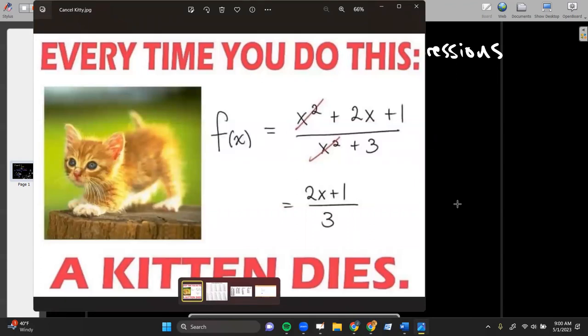I'm showing you this again. I named this file Cancel Kitty, but what I'm showing you is that you're not allowed to cancel. If you put a problem like what you see up on the board in front of a normal person, instinctively they would want to just cross out the x squareds because we're taught at an early age that if something's in the top of a fraction and the bottom, you can just cancel it out. The purpose of this is to make you feel a little bit bad about the fact that if you do this, a kitten will die.